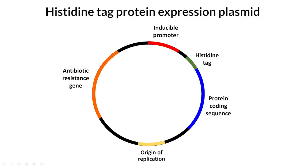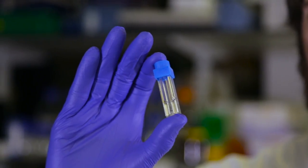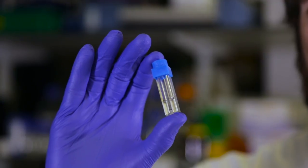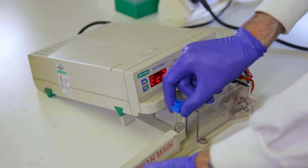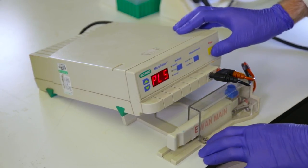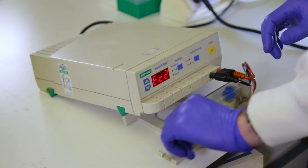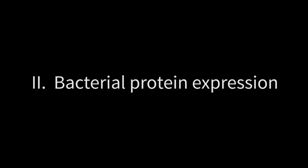The plasmid will be transformed into our production strain using electroporation. This is an aliquot of electrocompetent C41 cells. I've already mixed my plasmid in. We're going to put these in the electroporator and pass a high voltage electric current through the cells, creating transient holes in the cell wall. This will allow the plasmid to move into the cell and be taken up. We'll then select for the cells containing our plasmid and use them to express our protein.